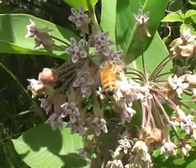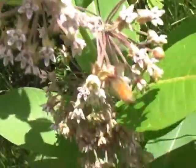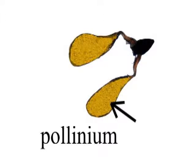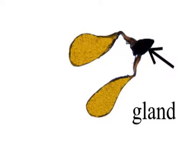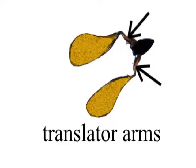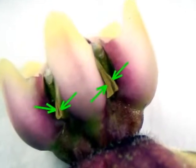Milkweed flowers also must be pollinated, but the process here is very different from that of most plants. The pollen in a milkweed is packaged in a waxy mass called a pollinium — plural: pollinia — and the whole structure is called a pollinarium. The black structure at the top of the pollinarium is the gland, connected to the pollinia with filaments called translator arms. This image of a milkweed flower, captured through a microscope, shows the pollinia attached to the flower head.